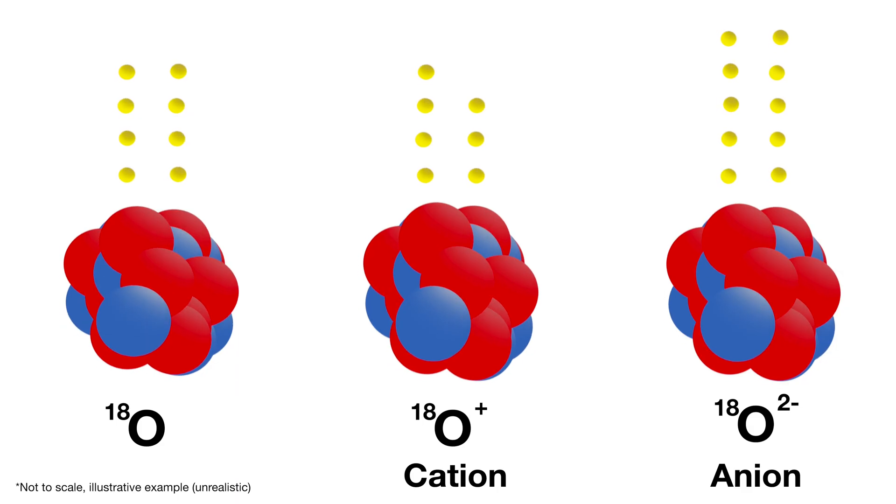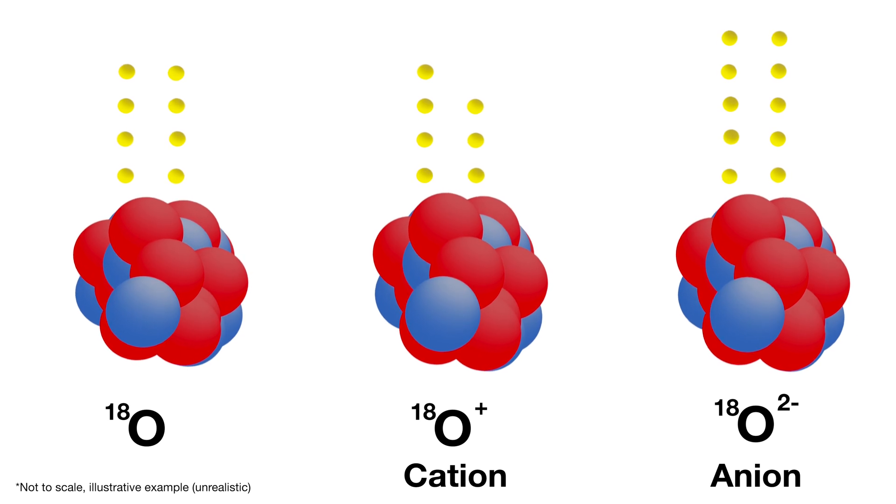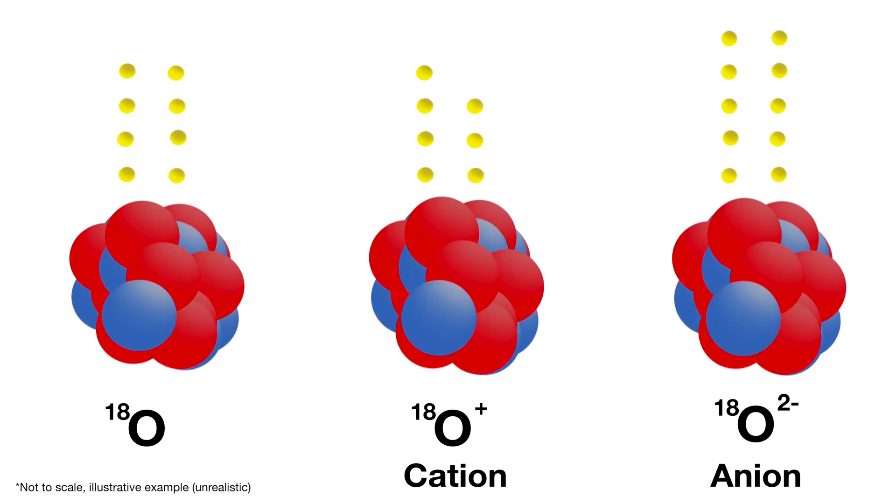Around the nucleus of an atom orbit electrons. Electrons have a negative charge. Opposite charges attract, meaning that the electrons are attracted to the protons in the nucleus and repelled by other electrons. Just know that electrons are organized around an atom into shells. The outermost shell is full of electrons called valence electrons, and they are where the action is. An atom that has the same number of electrons as protons has a neutral charge. An atom with fewer electrons than protons has a positive charge and is called a cation. An atom with more electrons than protons is negatively charged and called an anion.